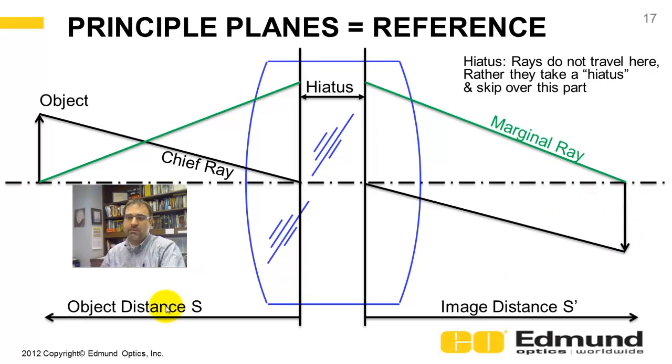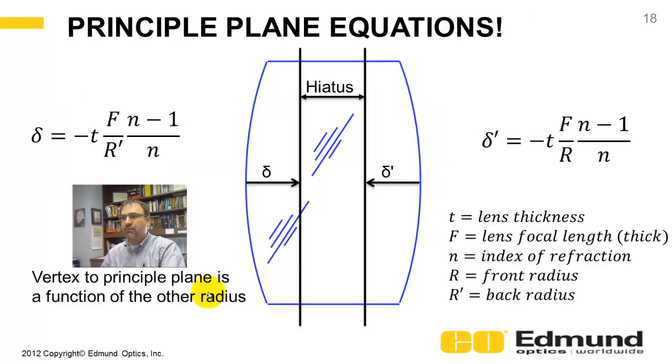Then you can calculate your image distance. It will tell you where your image is, and you can use the lens makers equation or the nomographs of past videos to find out the relationship between image and object and focal length.